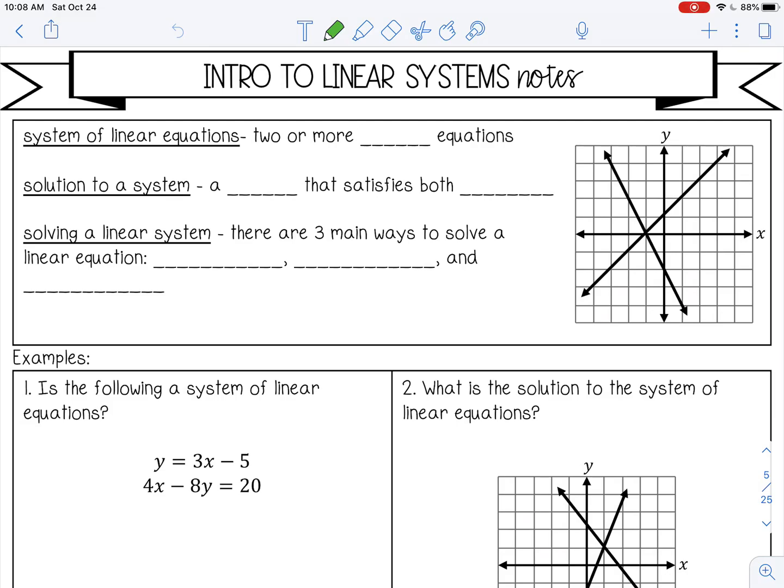Welcome to this intro to linear systems lesson. A system of linear equations is two or more linear equations that have a relationship. They're either graphed on the same graph or they are related in a real-world problem. A solution to a system is a point, an ordered pair, that satisfies both equations.